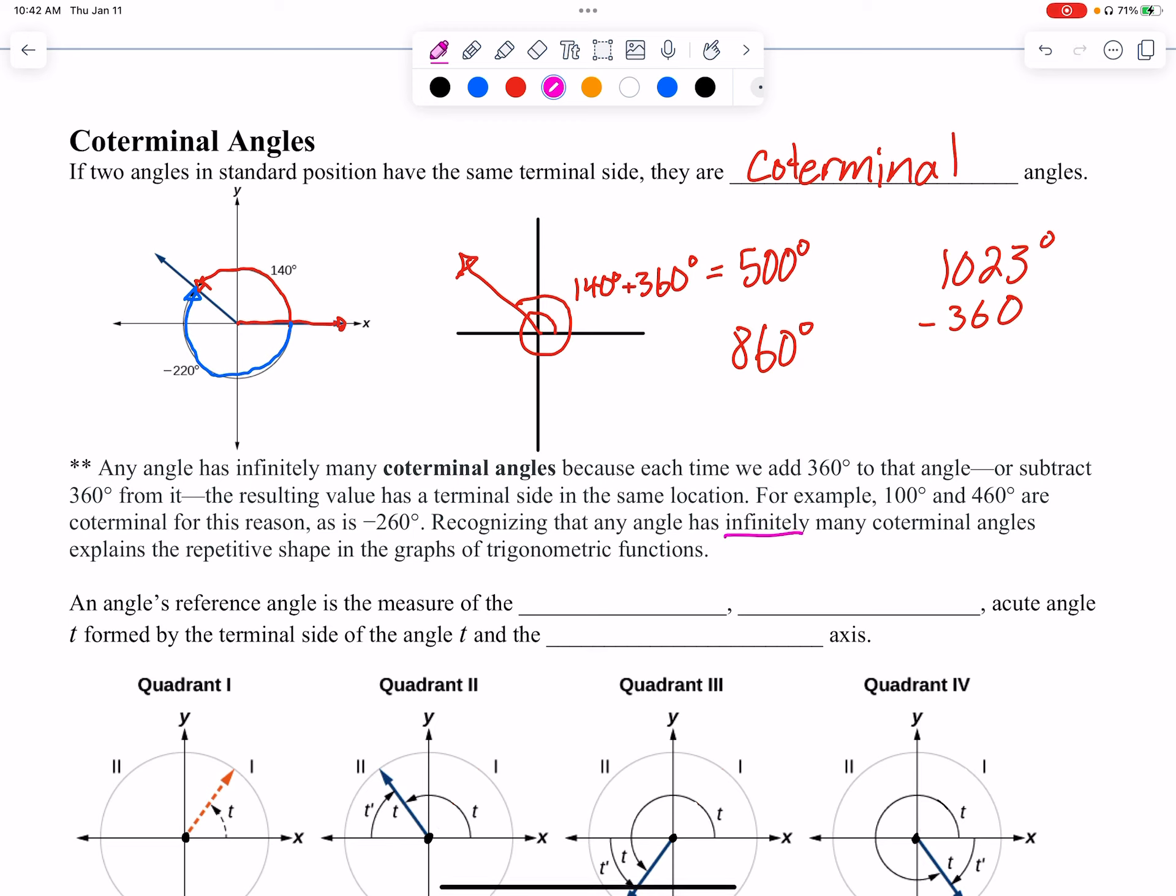And this will explain, they put it here, the repetitive shape in the graphs of the trigonometric functions. You have no idea what that means yet, but you will in the next chapter. But the reason that things are going to start being repetitive, and we'll see this, is because when I rotate, I hit that same direction. Like if I just start spinning, I'm going to hit the same direction over and over.